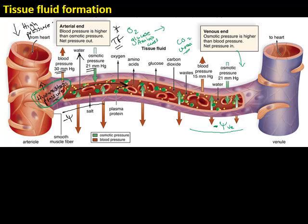The much more negative water potential at the venous end compared to the arterial end creates a higher osmotic pressure, which draws tissue fluid into the venous end of the capillary. This time the osmotic pressure wanting to draw tissue fluid in is greater than the hydrostatic pressure, so the net filtration pressure is a negative value — the more negative water potential means tissue fluid drains back into the venous end.